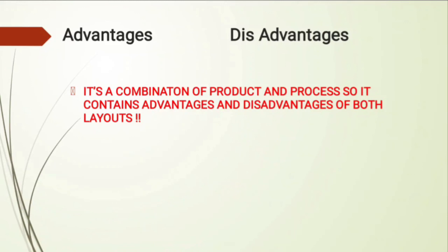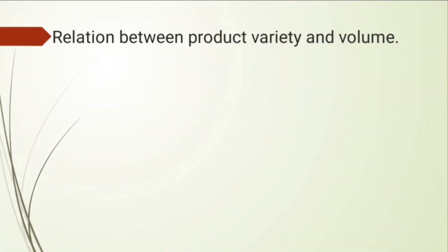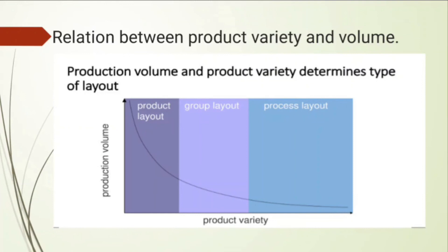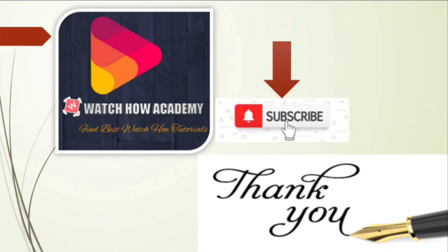Advantages and disadvantages of the combined layout are basically a combination of those from both product and process layouts. Finally, this graph represents the relation between production volume and product variety. The greater the production volume, the lesser will be the variety. On the y-axis is production volume and on the x-axis is product variety. The process layout has low variety and low volume; the group layout has moderate variety and volume; the product layout has less variety but very high volume.